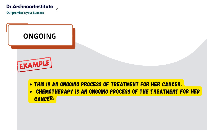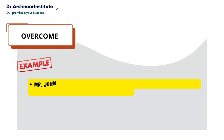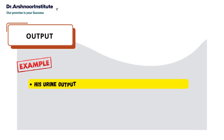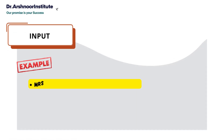We can even add chemotherapy: chemotherapy is an ongoing process of the treatment for her cancer. Next word is 'overcome': Mr. John has to have proper compliance with his treatment to overcome the severity of his disease. Next word is 'output': his urine output was not satisfactory after the surgery. Then 'input': Mrs. Mary's dietary input is insufficient.